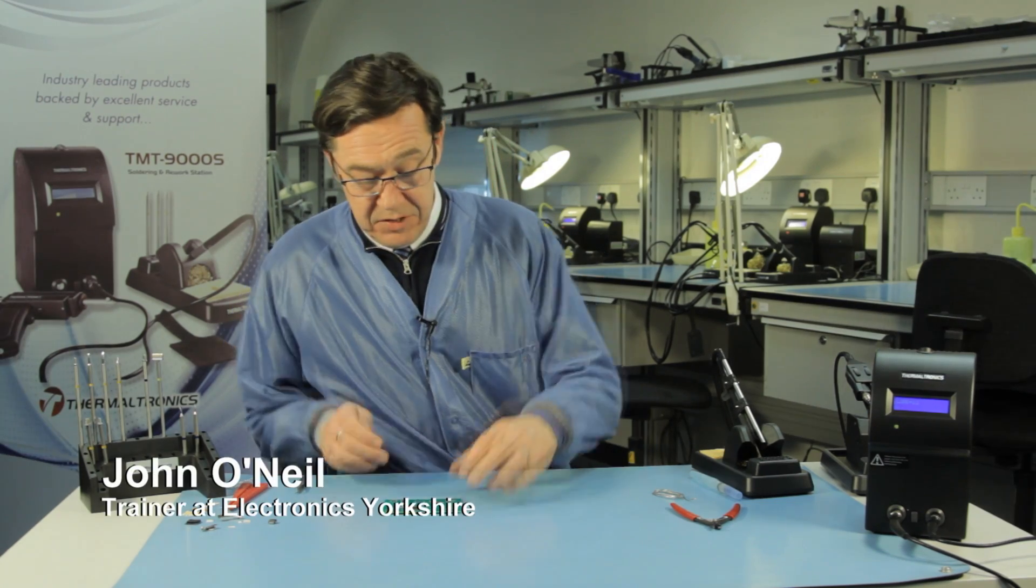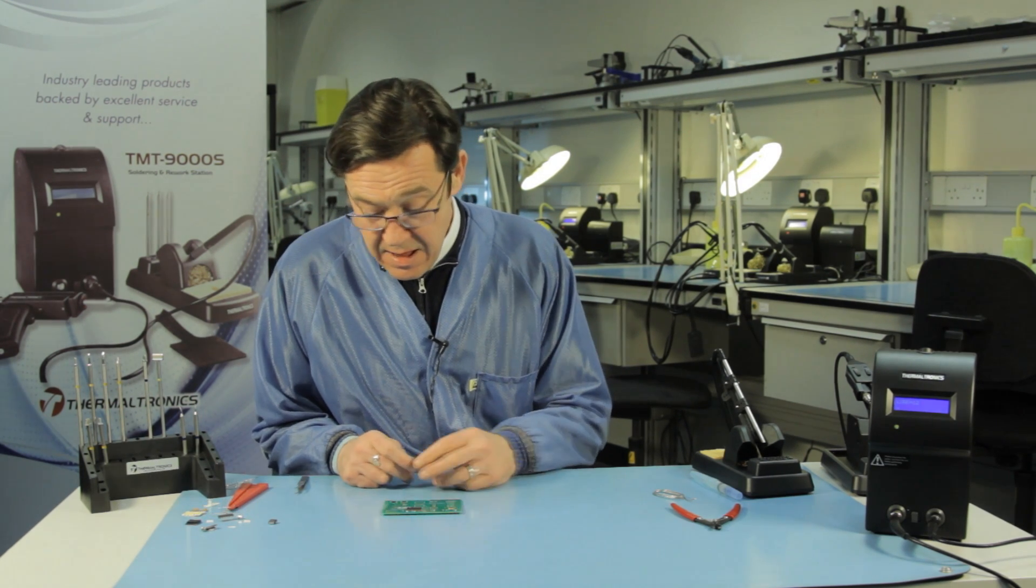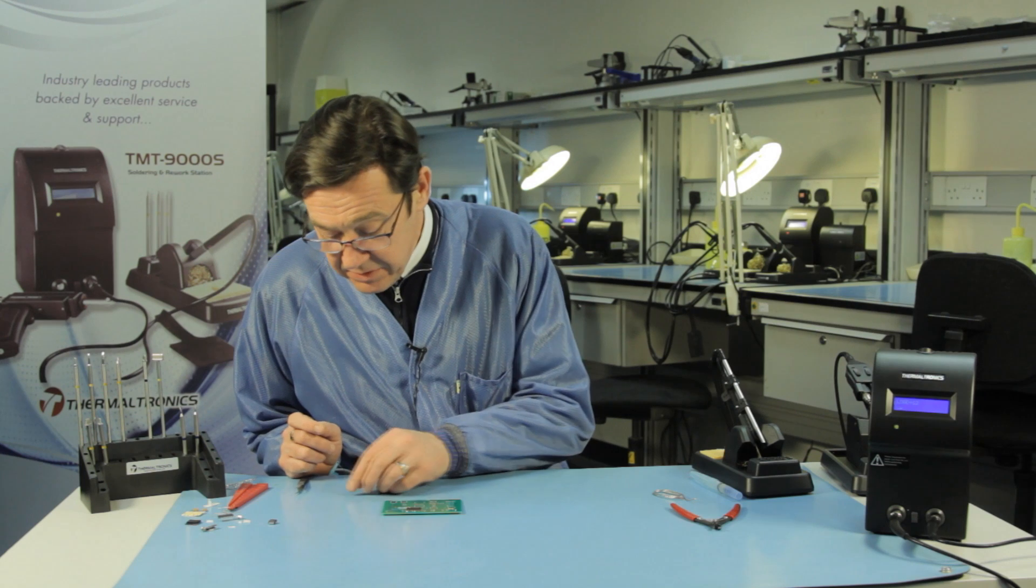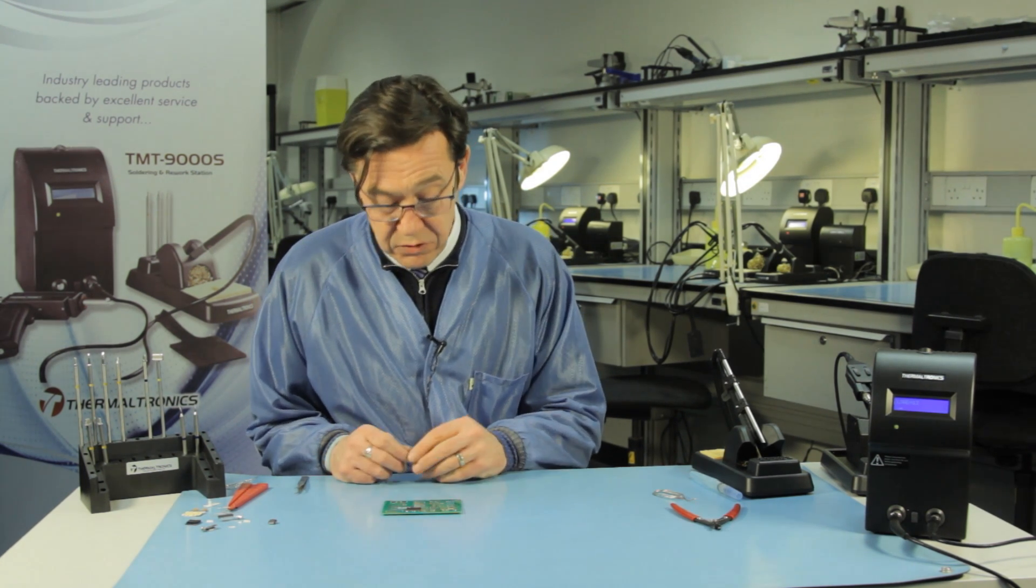We're going to do some basic surface mount soldering. The most basic component we can put down is a surface mount chip resistor. The first thing we have to do is prepare one side of the land for soldering.